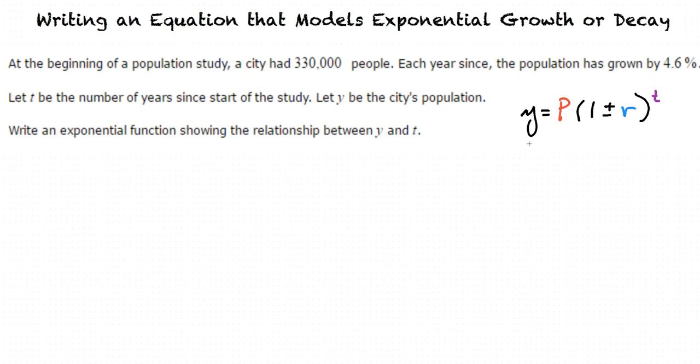In the parenthesis, it will be 1 plus R if it's an exponential growth model, and it will be 1 minus R if it's exponential decay.